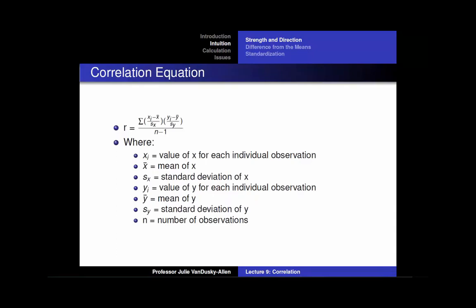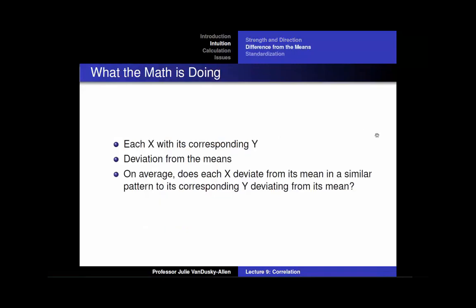This is how you calculate a correlation coefficient. The numerator is the sum of the product of each individual x observation minus the mean of x, that value divided by the standard deviation of x, and each y observation minus the mean of y, that value divided by the standard deviation of y. The denominator is the number of observations minus 1. What the correlation coefficient measures is whether each individual x observation deviates from its mean in a similar pattern to its corresponding y deviating from its mean.